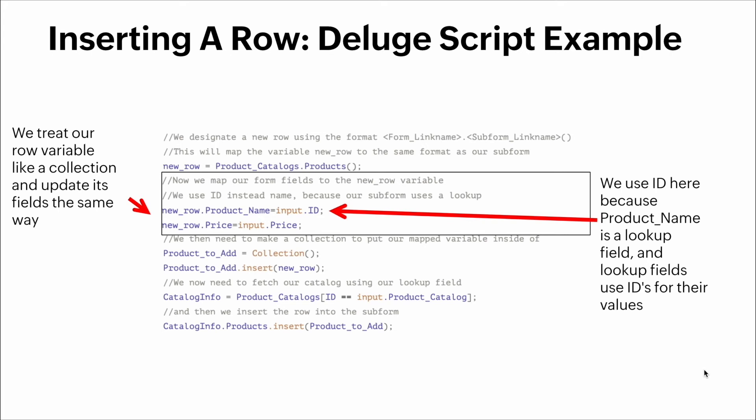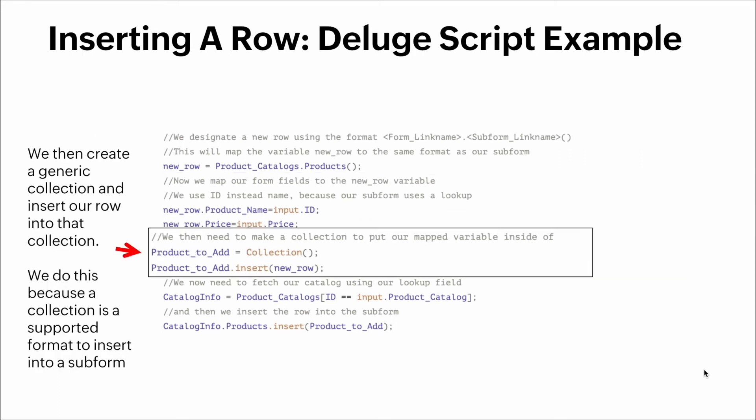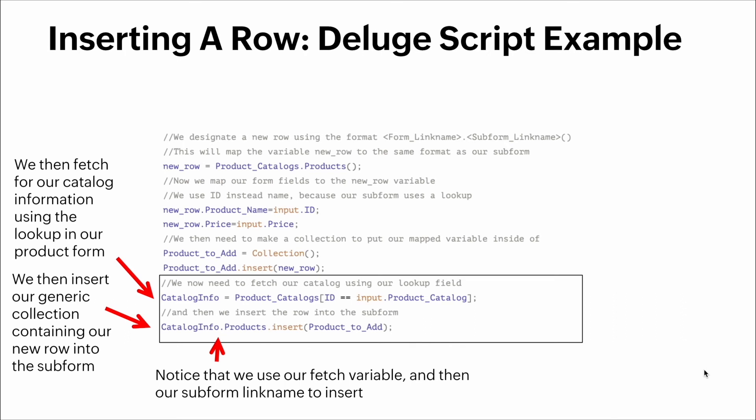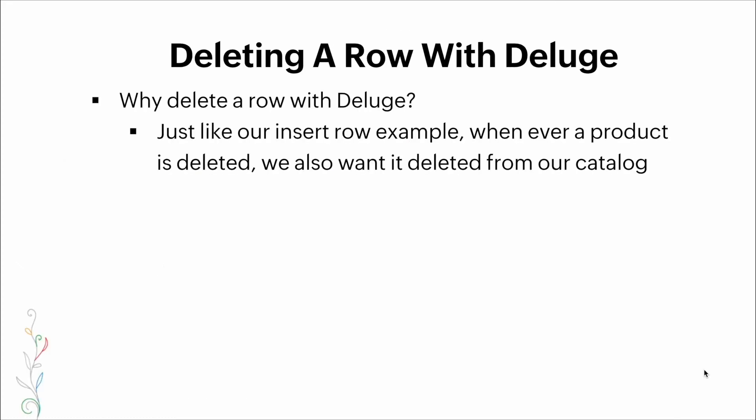We use the ID here because the product name is a lookup field, and lookup fields use IDs for their values. We then create a generic collection and insert a row into it — collection is the supported format to insert into a subform. We then fetch our catalog information using the lookup in our product form, and then insert our generic collection containing our new row into the subform, using the fetch variable followed by the subform link name. Now let's talk about deleting a row with Deluge — just like our insert row example, whenever a product is deleted we also want to delete it from our catalog.